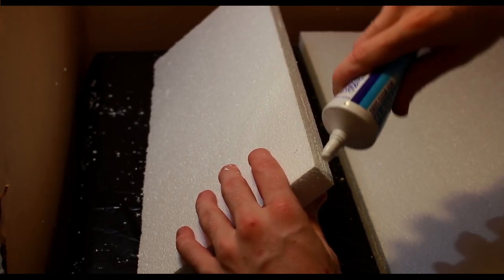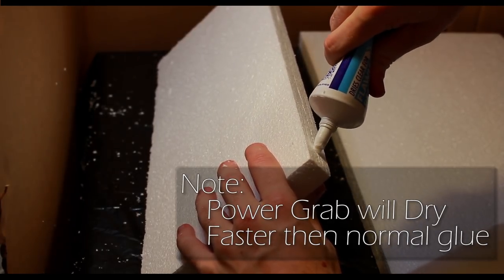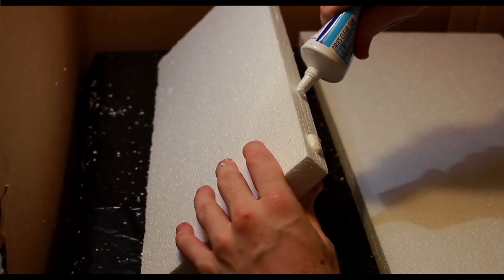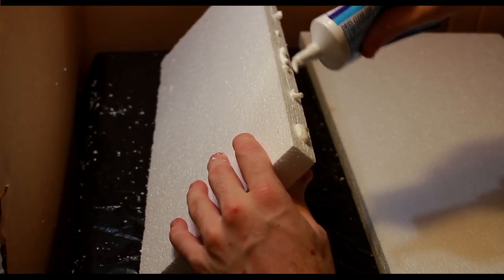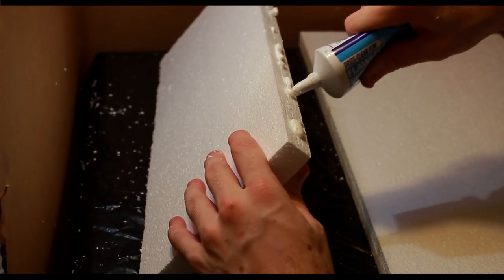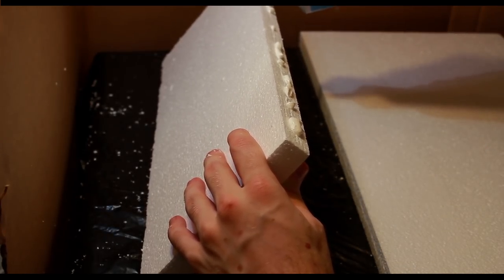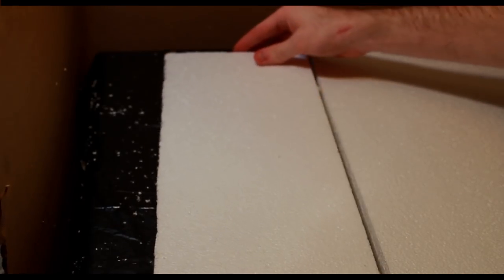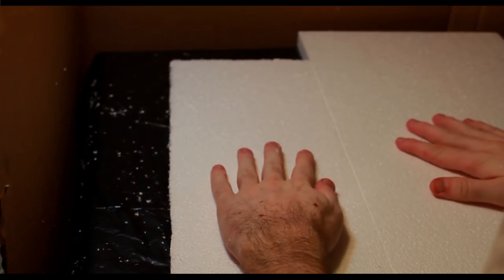What I use is a Loctite power grab. You can get all the materials at Home Depot, but you just place it on here. What I did, I beveled some edges into the styrofoam so it would grab a little bit easier on this one because I had to make my piece a little bit wider because my tank's a little bit bigger. Always make sure to put pressure on it, squeeze them together, let it dry completely before you try to do anything.